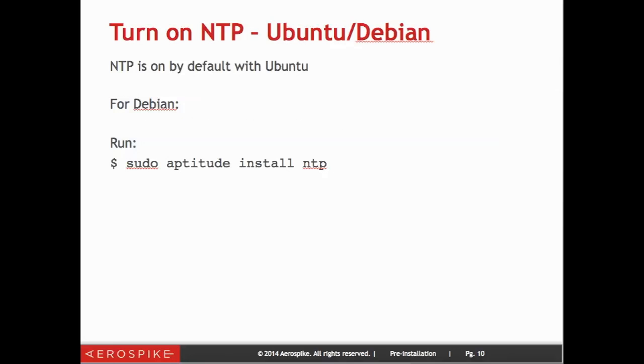With Ubuntu, NTP is on by default. You would have to turn that off, so you can simply turn that back on. And for Debian, you can simply run sudo aptitude install ntp.